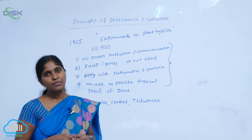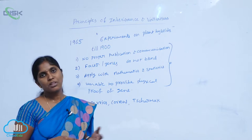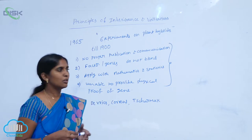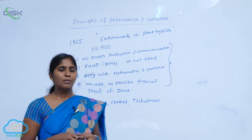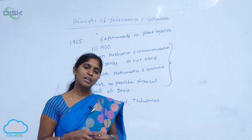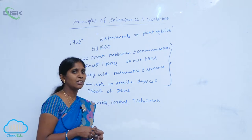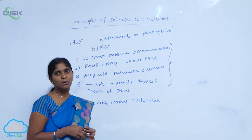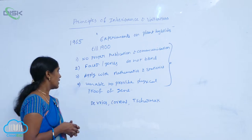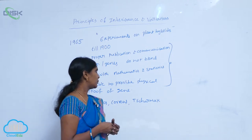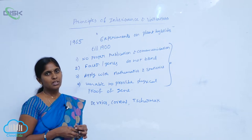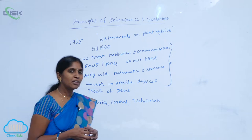Both the law of segregation and the law of dominance were not accepted by contemporary scientists. Another contribution — the application of mathematics and statistics in the biological field — was also invented by Mendel, but was equally not accepted. Additionally, he was unable to provide physical proof of the gene, which was also one of the drawbacks leading to his failure during his lifetime.